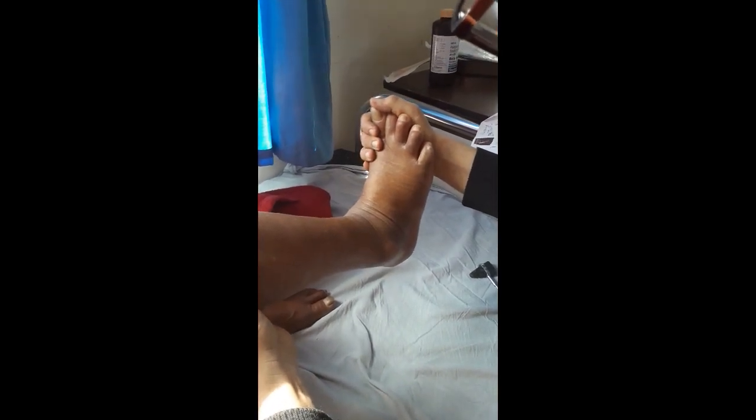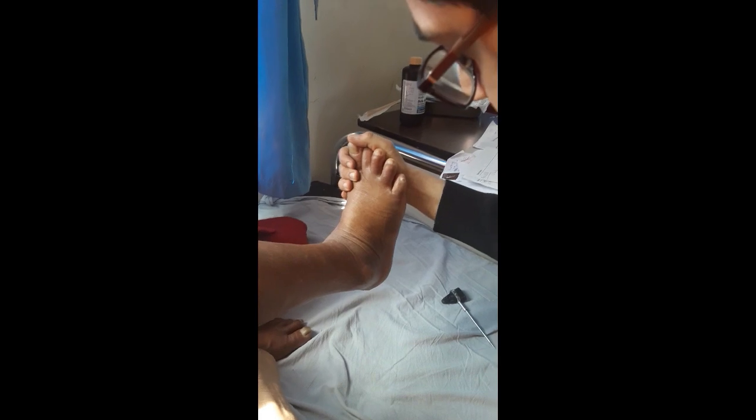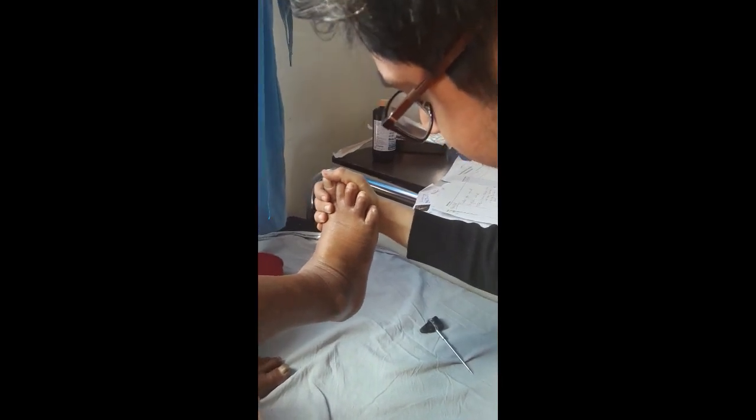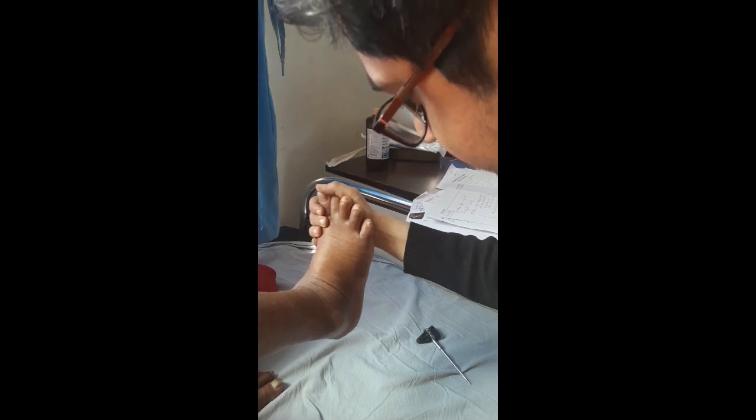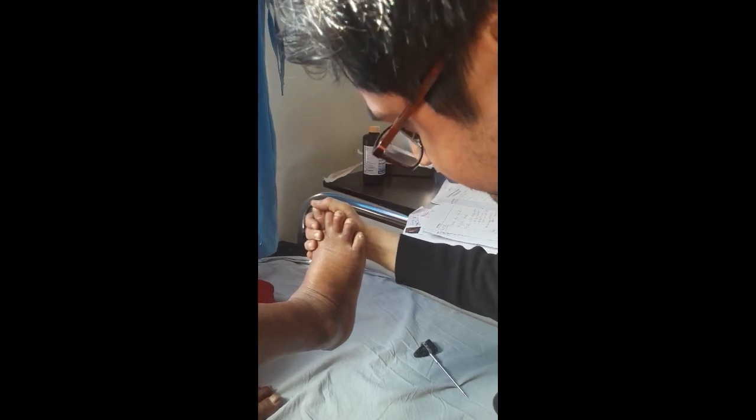Here you can see ankle clonus elicited by an examiner. When the examiner performs the test in the way explained earlier, there is a continuous alternating movement at the ankle. This beating usually continues as long as the pressure is maintained by the examiner at the foot of the patient.